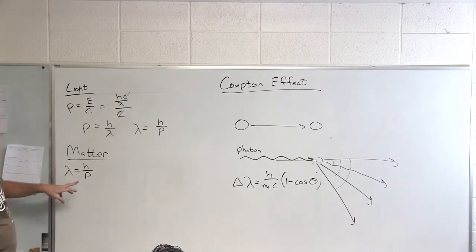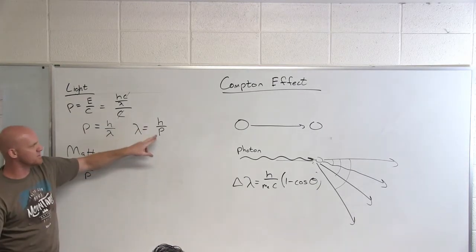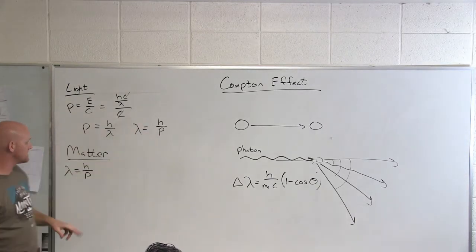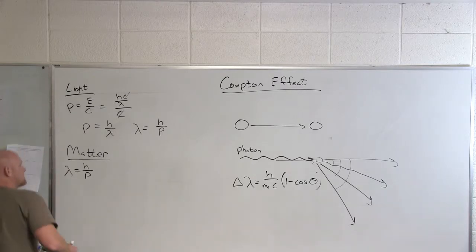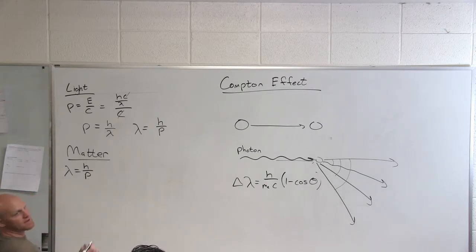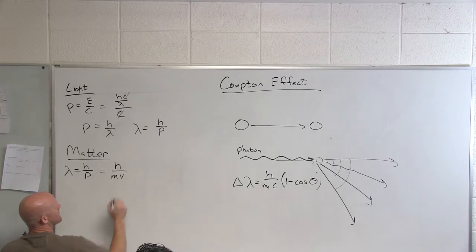If we look at matter, he proposed that if light has a wavelength of h over its momentum, then matter might as well. This symmetric view of nature—so what's momentum for matter? That is mass times velocity, and so he looked at the wavelength as being h over mv.